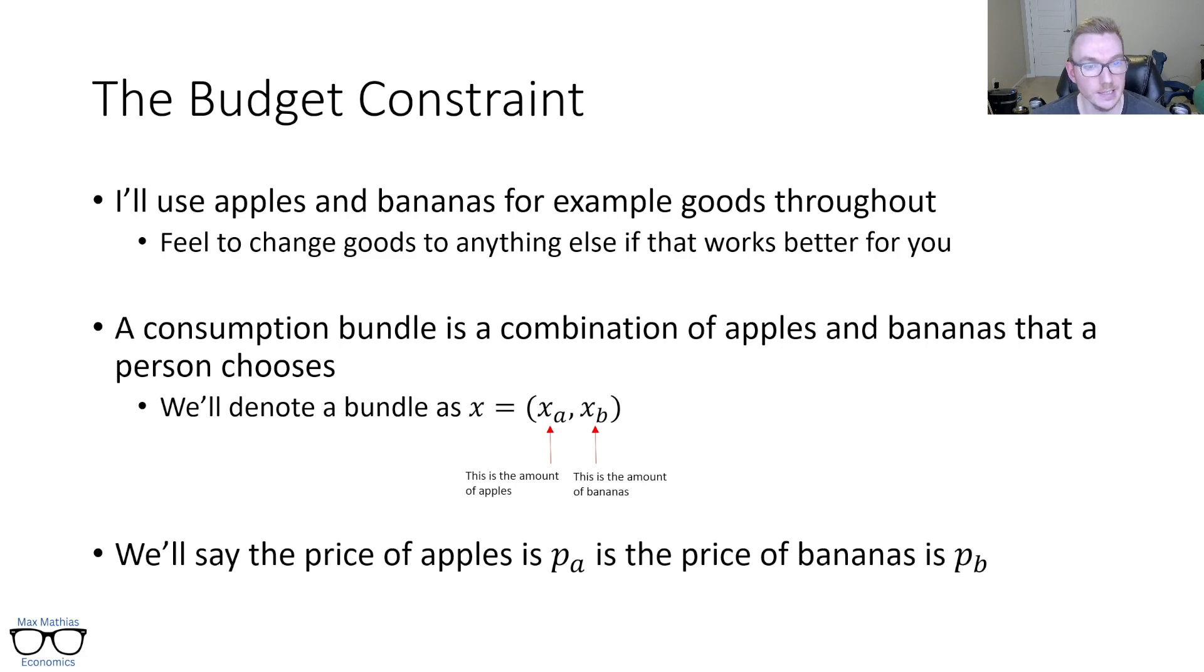The last thing that we're going to say is that the price of apples is P_A, just to match that X, and the price of bananas is P_B. This is the same thing. These are just numbers. The price of apples could be two bucks. The price of bananas could be three. They could be different. It doesn't matter. We're doing these just as placeholders.